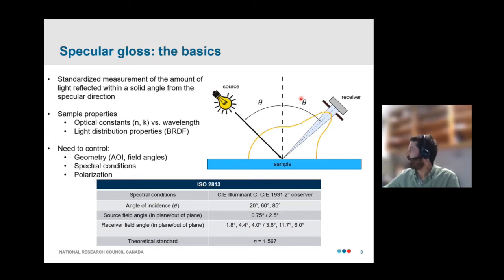Now, in general, this measurement will depend on the optical constants of the material. It'll depend on their dispersion with wavelength, and it's also going to depend on their light distribution properties. So in order to obtain a meaningful measurement that can be compared between instruments, it's important that the experimental conditions related to geometry, by that I mean the angle of incidence and the field angles, the spectral conditions and the polarization of the measurement device are all well controlled.